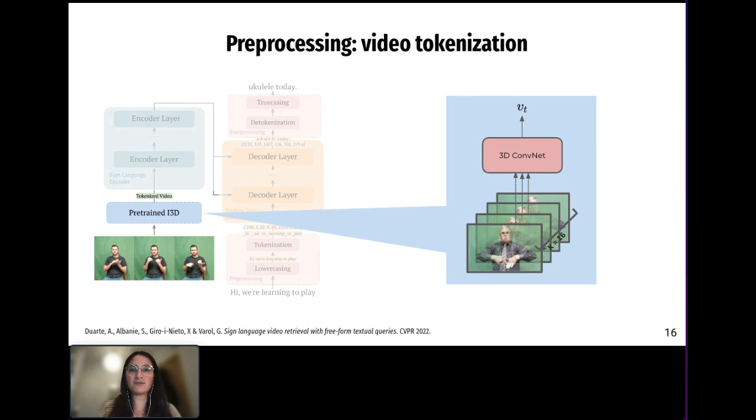One of the actual ongoing efforts of the sign language research community is to find the best way of doing video tokenization. Although many approaches have been proposed, we chose to use the inflated 3D ConvNets developed for action recognition and initially trained on the Kinetics dataset. Then we use this model pre-trained with sign language data. First for sign language recognition tasks on the BSL1K dataset, and then for sign language retrieval tasks on HowToSign.